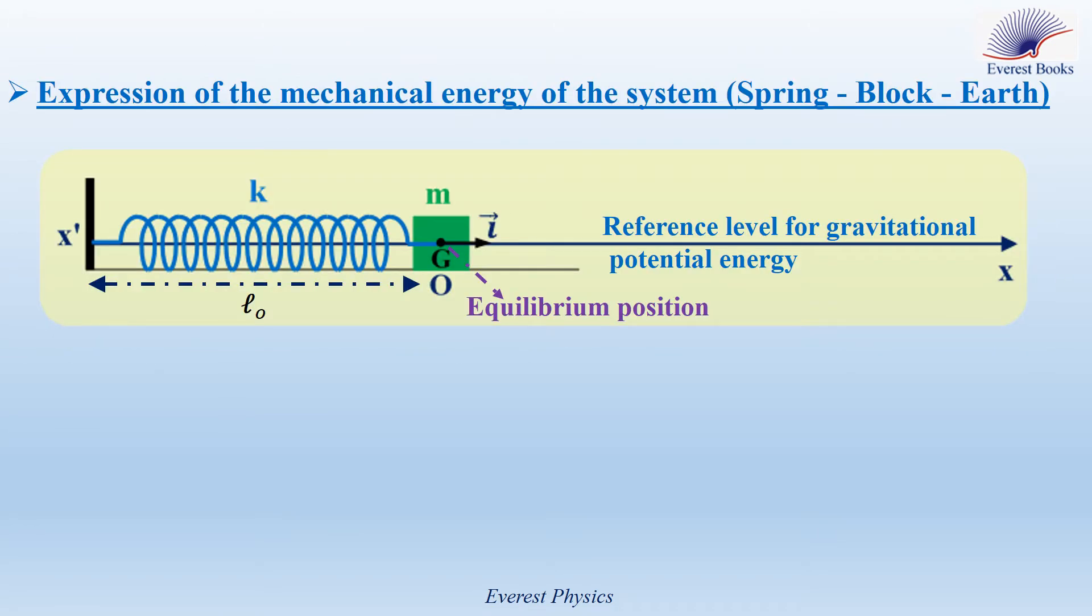Expression of the mechanical energy of the system spring block Earth. In this oscillating system, the block having a mass M, and the spring of negligible mass having a force constant K. When the spring is neither compressed nor stretched, the center of mass G of the block coincides with the origin O of a horizontal X axis, and the horizontal plane passing through G is taken as a reference level for gravitational potential energy.